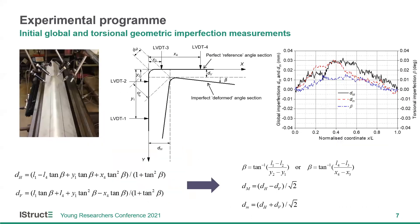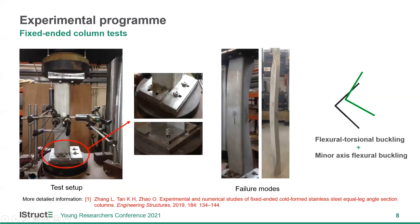We measured the initial geometrical imperfections for the tested angle section specimens, including the initial torsional geometrical imperfections and initial global geometrical imperfections about the major and minor axis. This is the setup for the fixed-ended column tests. An anchor device is placed at the specimen end to prevent the end section from any deformations during testing. Clear flexo-torsional buckling can be observed for all tested specimens. For longer specimens, minor axis flexural buckling can also be observed, indicating that major axis flexo-torsional buckling is always accompanied by minor axis flexural buckling.